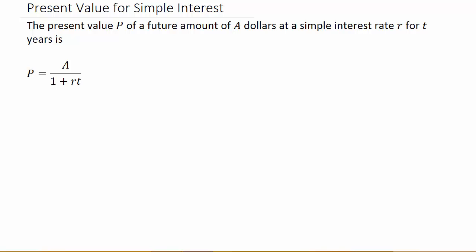So, present value for simple interest. It says the present value P of a future amount of A dollars at a simple interest rate R for T years is P equals A over 1 plus RT.